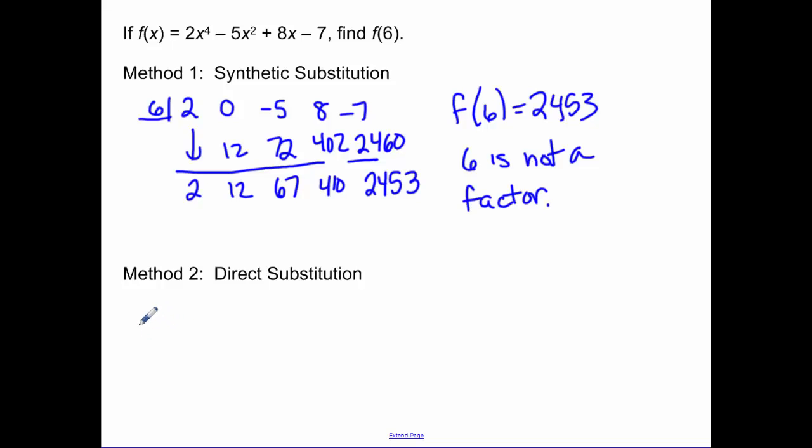Direct substitution - what we do is we would just evaluate that function at 6. So we would do 2 times 6 to the fourth minus 5 times 6 squared plus 8 times 6 minus 7. And when you go through all that math you end up getting the same thing. So synthetic substitution is just a short way of evaluating a function.